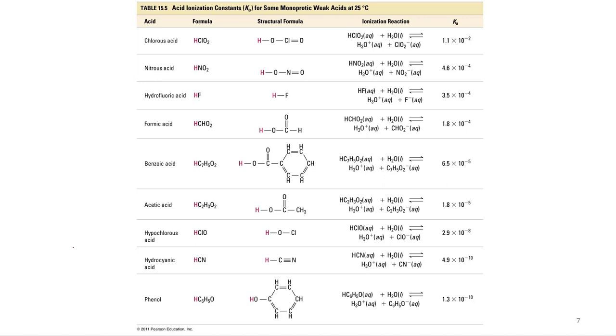So let's look at a list of acids, of weak acids. These are acid ionization constants for some monoprotic weak acids at 25 degrees Celsius. So here's acetic acid in the middle of the table. But let's just look at general what's going on. So here, chlorous acid, it's 1.1 times 10 to the negative 2.